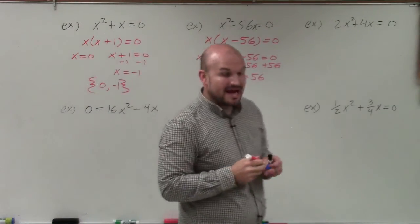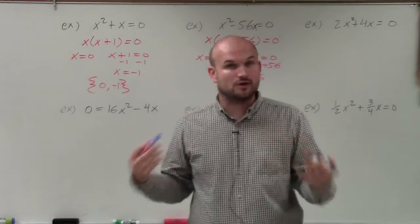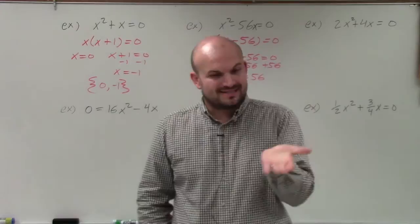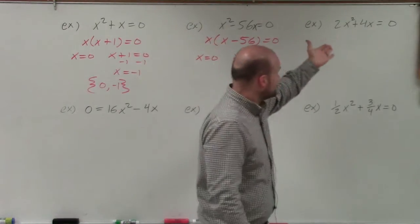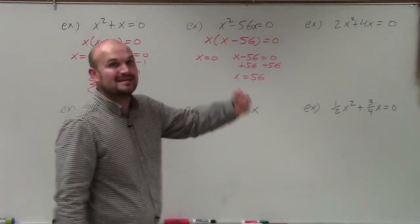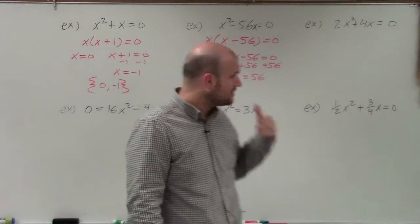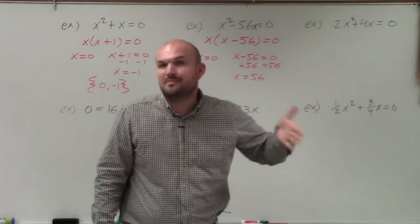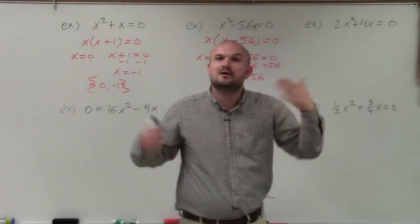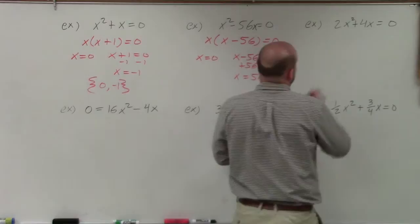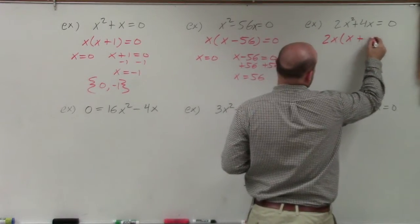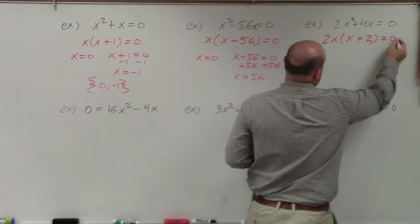Now in the next case, both of my terms have a coefficient. One has a coefficient of 2, the other has a coefficient of 4. We look at what is the common factor. We know they have x squared and x. But what about the numbers? What divides into 2 as well as divides into 4? That's 2. So I'm going to factor out a 2x. When factoring out a 2x, I'm left with x plus 2 equals 0.